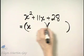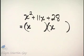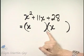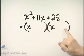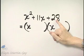Of course x times x will give us x squared. Then we are looking for two factors of 28 whose sum is 11.